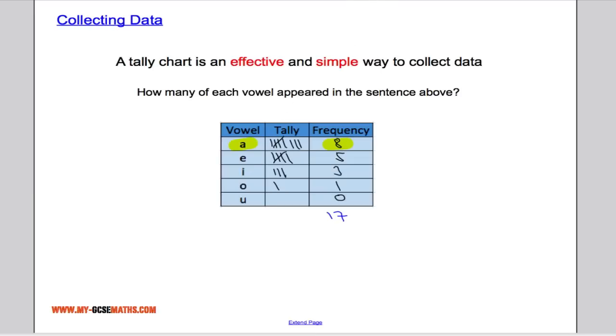Now suppose we have the tally chart, we can actually pick off a few things straight away. I can see immediately that the mode is A, so the most common vowel to appear, most frequent, is A because it has the highest frequency. And I can also see quite clearly that the total number of vowels in the sentence is 17. I got that simply by adding up all the frequencies. So just a couple of things you could be asked to do with a tally chart.